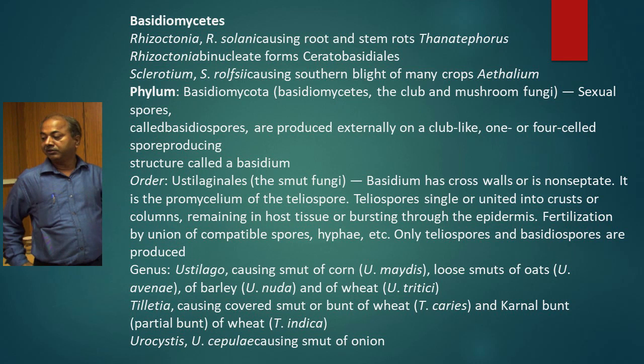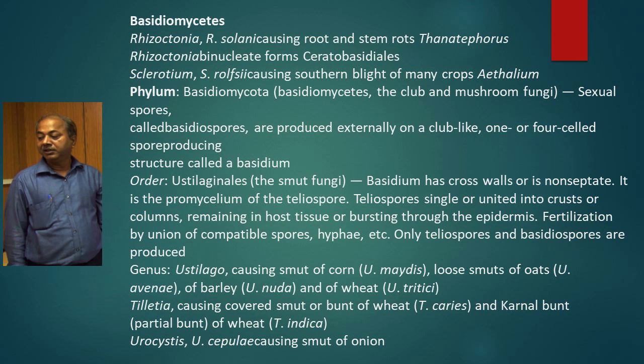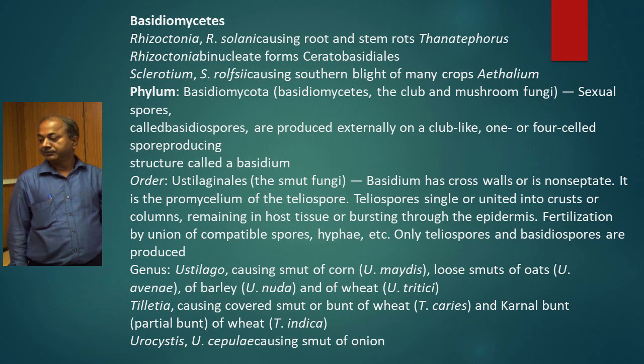Rhizoctonia solani comes under Thanatephorus, while the Rhizoctonia binucleate forms come under Ceratobasidiales. Then Sclerotium rolfsii causing blights in many crops — its perfect stage is Athelia.